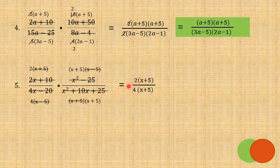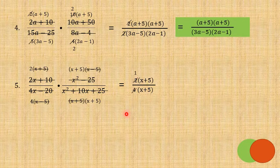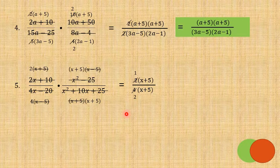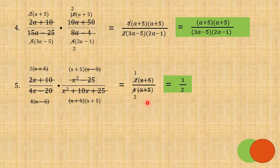After multiplying, we get 2(x+5) over 4(x+5). Now 2 and 4 can be cancelled out — simplify to get 1 over 2. So the answer is 1/2.